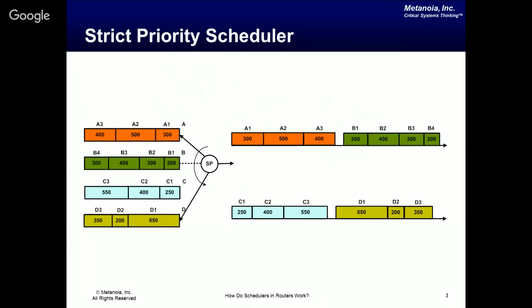The trade-off of strict priority is that if a lot of traffic comes to the high priority queue, it could potentially starve every other queue. Likewise, if B had a lot of traffic and A didn't, B could monopolize the output link and starve C and D. To overcome this difficulty, you need something more than strict priority — you need a way to arbitrate between queues, which leads to the round-robin scheduler.